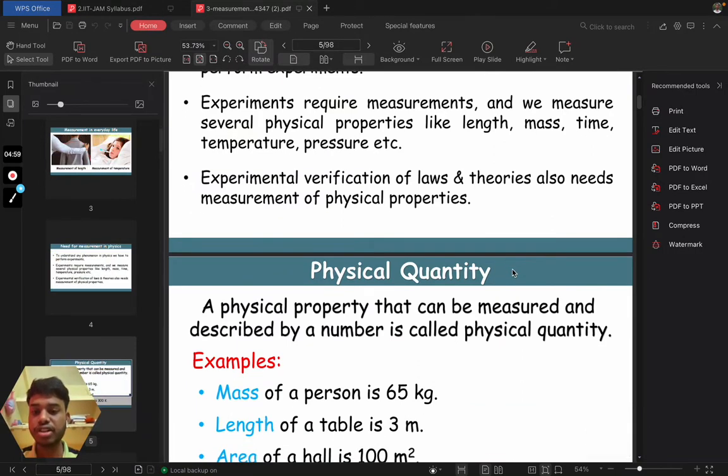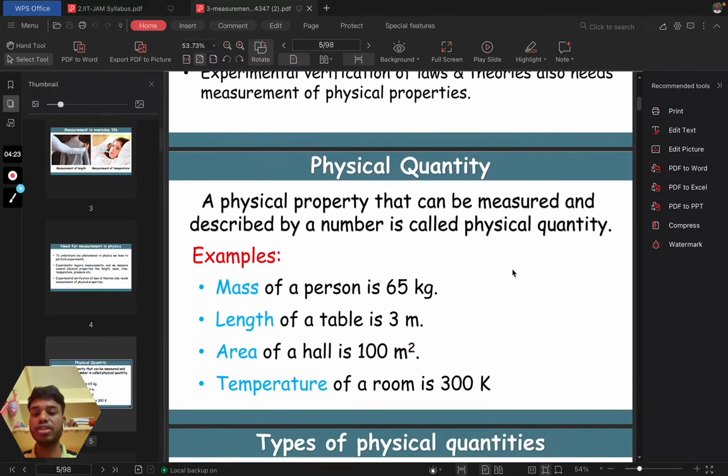A physical quantity is something which is a physical property that can be measured and described by a number. Like you can say that there is a person sitting next to you who is of 65 kg mass. So here the thing mass, this mass is a physical quantity. And suppose the table in which you are studying is 3 meters long. So this is length and this length is the physical quantity here.